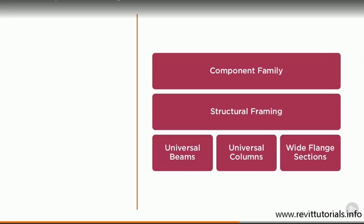Within each family category, we then have different families. So you could choose to model your own component families for structural framing, or more likely, you would choose to use a standard profile, such as a universal beam, a universal column, or maybe a wide flange section.